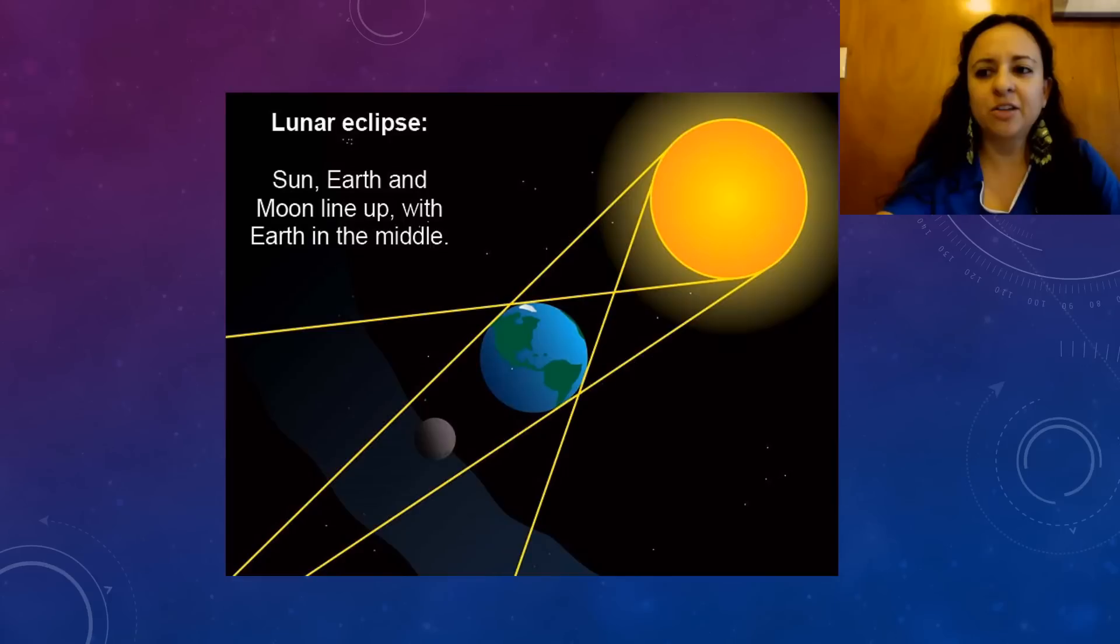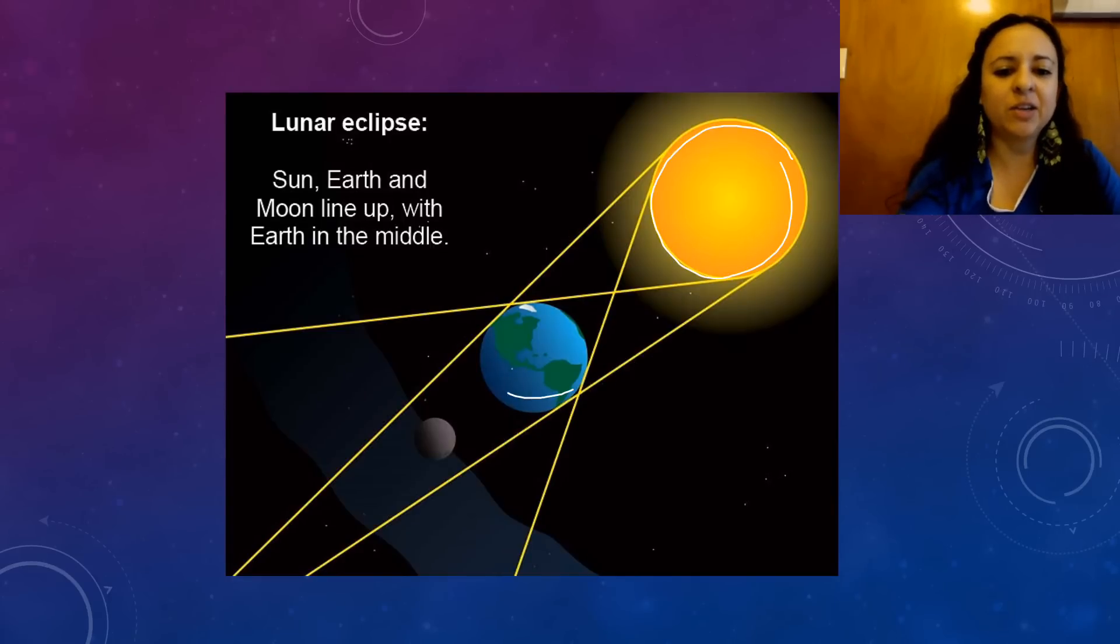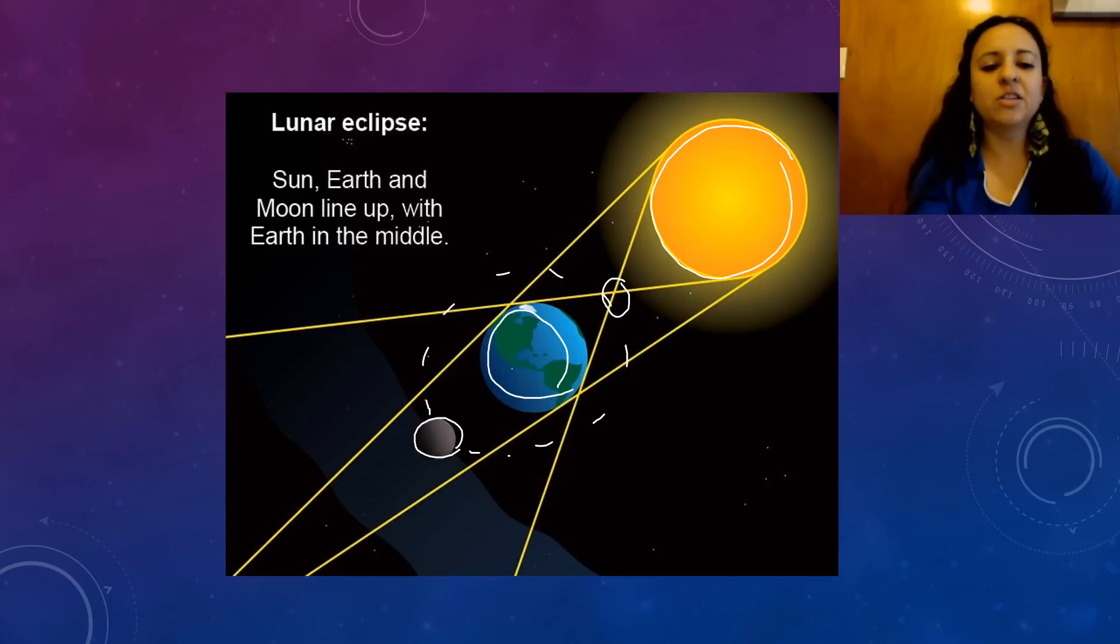On this slide, we're going to see another diagram and it's going to be a little bit different. Still have the sun right here. And now I want you to take a look at the Earth. And then here's the moon. Remember the moon revolves around the Earth. But instead of being over here like it was before, it's on the other side.